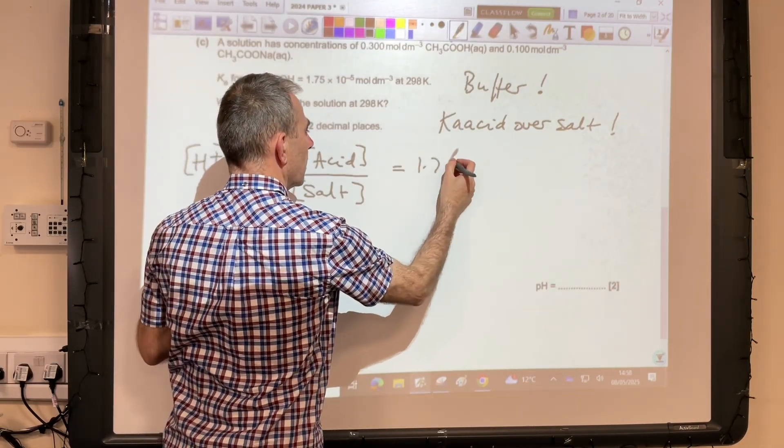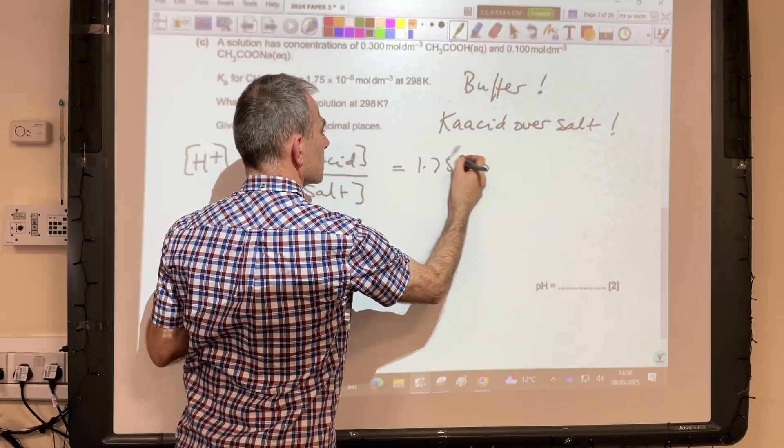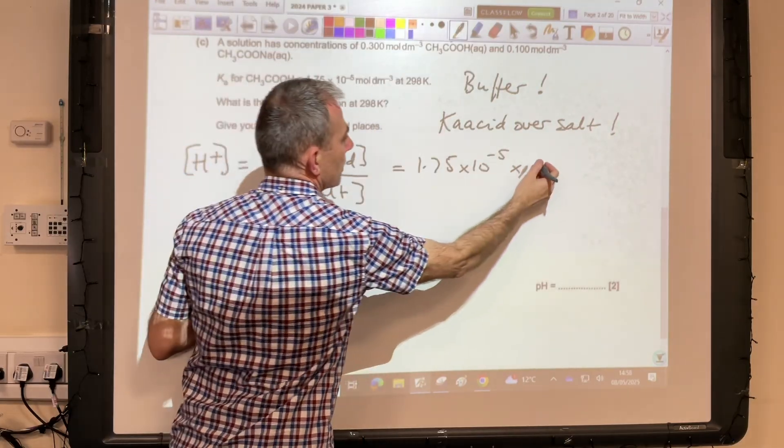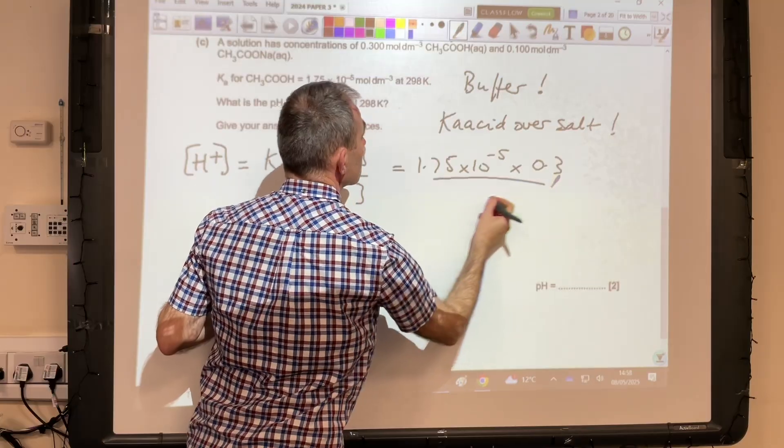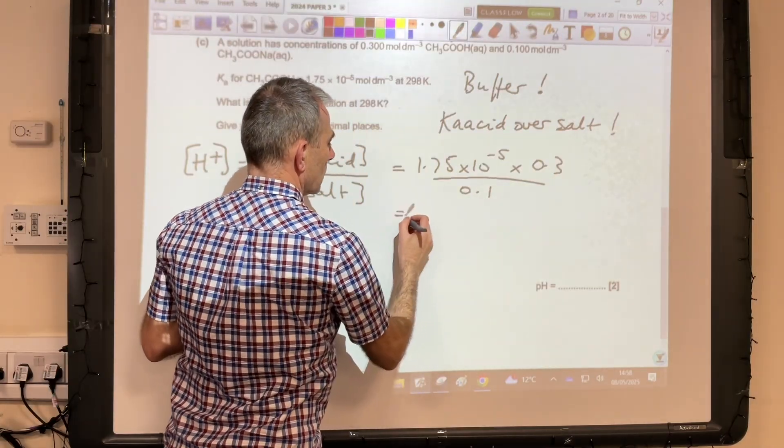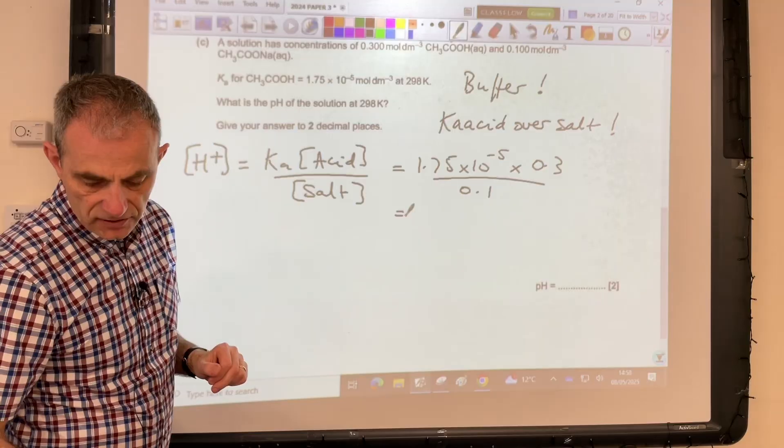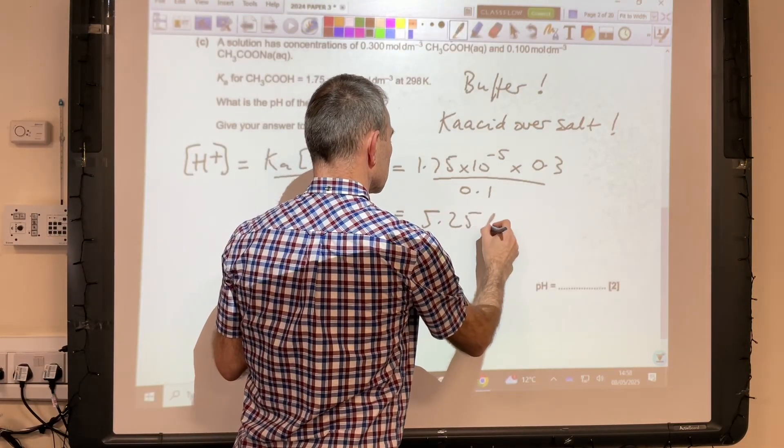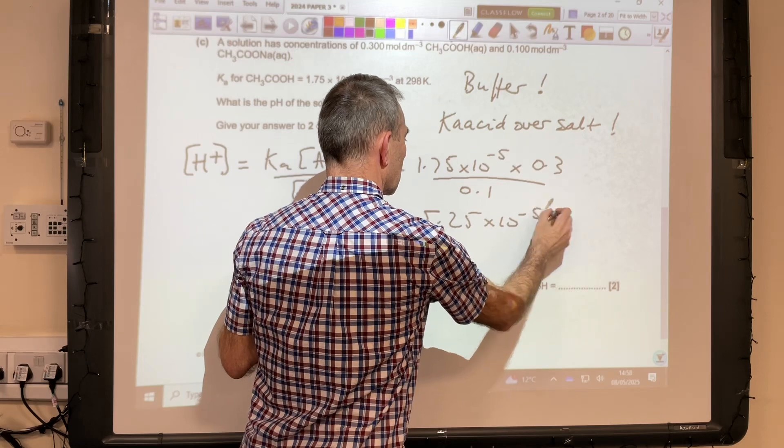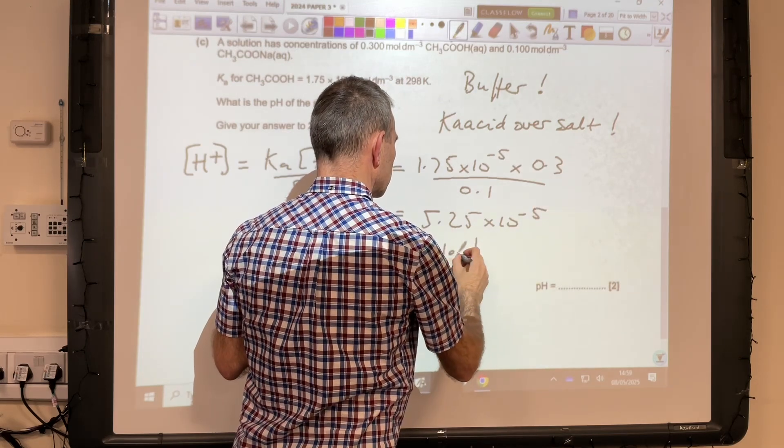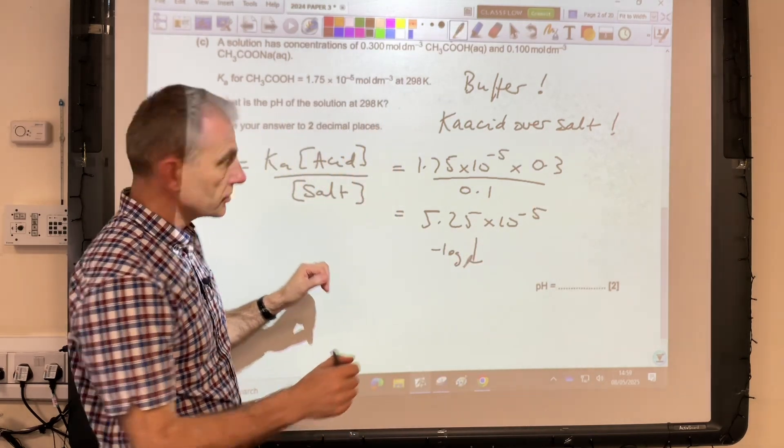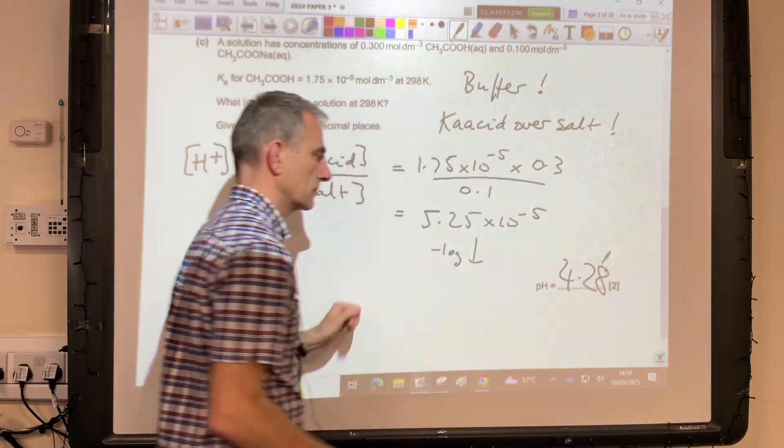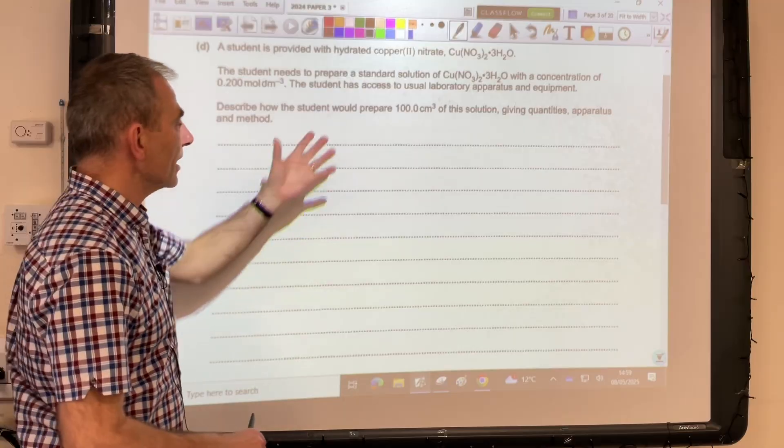So Ka is 1.75×10⁻⁵, acid concentration is 0.3, salt concentration is 0.1. So that H⁺ concentration comes out at 5.25×10⁻⁵, and then we minus log that and we get a pH to two decimal places: 4.28.